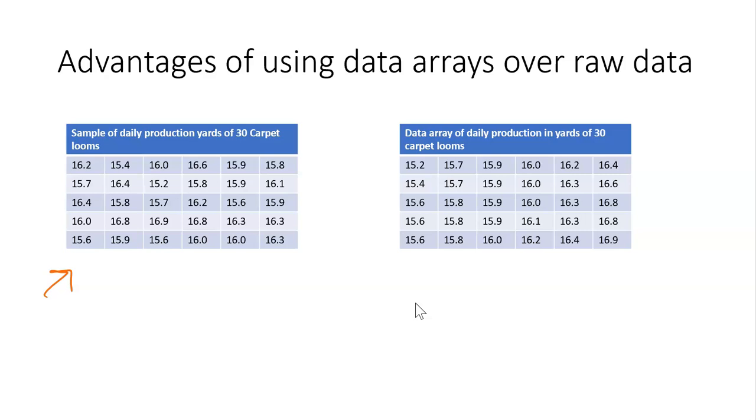How is this going to help us? In this table we can't find what the range of the data is, but here we can answer some questions. We can quickly notice the lowest and highest values in the data—15.2 is the lowest and 16.9 is the highest. That is one insight we can get from this data just by arranging it.